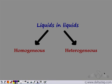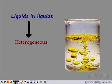We have already seen the separation techniques for a solid-liquid mixture when it was homogeneous and heterogeneous. Now let's look at a liquid-liquid mixture. A liquid-liquid mixture can be homogeneous or heterogeneous. Let's start with a heterogeneous mixture of two liquids.